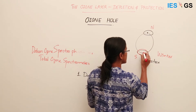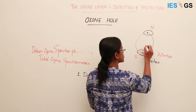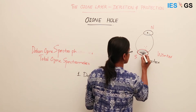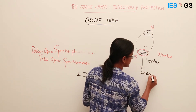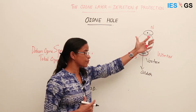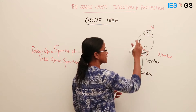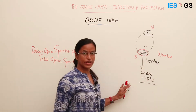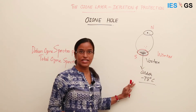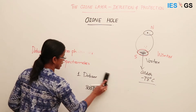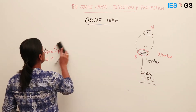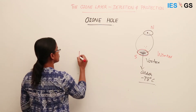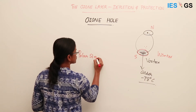This polar vortex partitions the air inside the polar region from the atmosphere outside, preventing mixing of air from other parts of the atmosphere. As a result, the air inside the polar region becomes colder and colder. When it reaches about minus 78 degrees Celsius, a particular type of cloud forms — they are called polar stratospheric clouds.